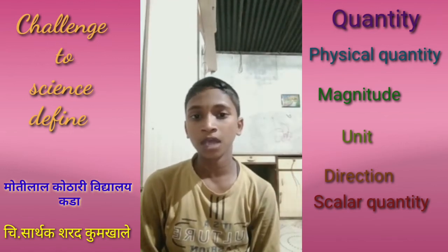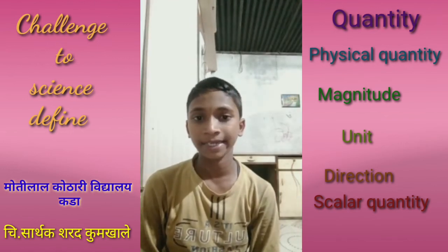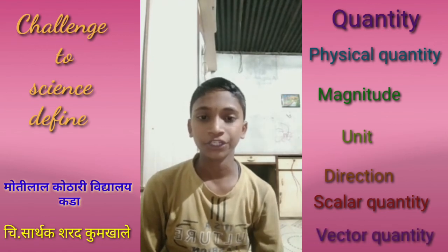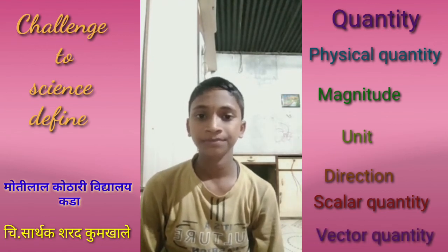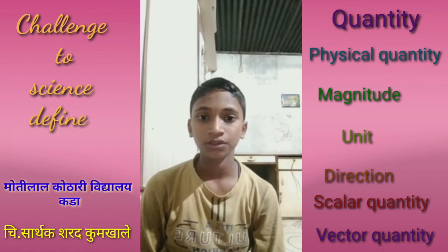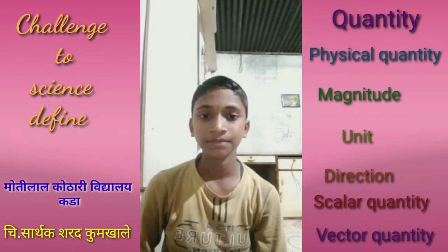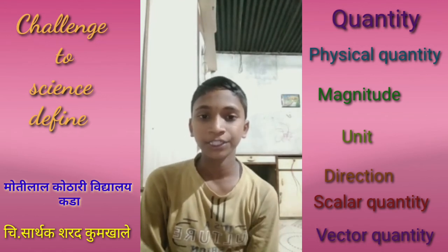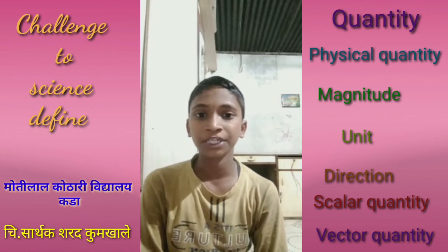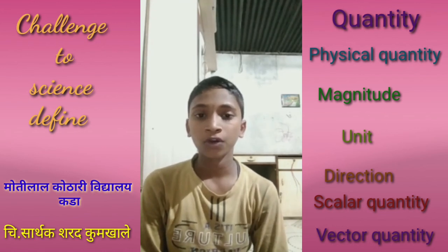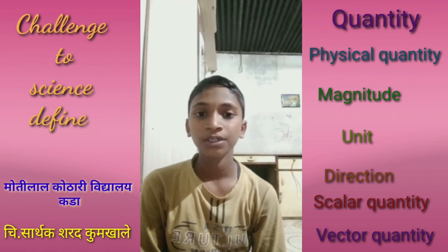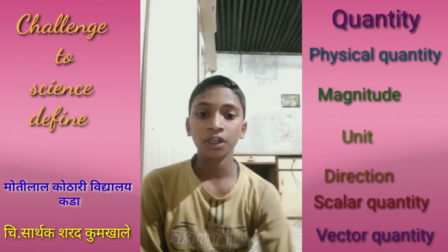Seventh: vector quantity — the quantity that is expressed completely only when both magnitude and direction are given is called as vector quantity.